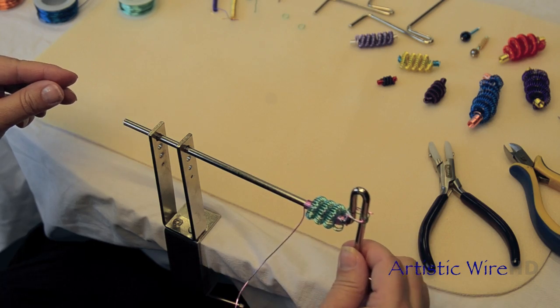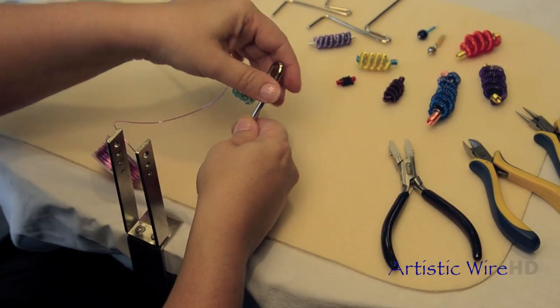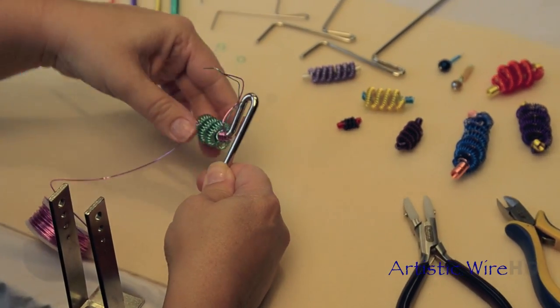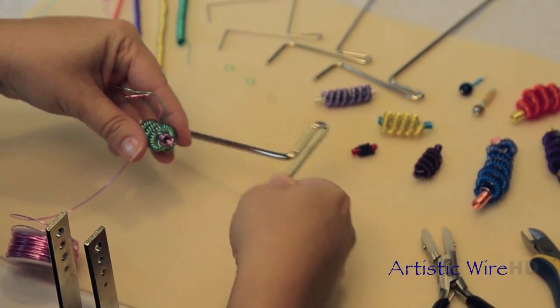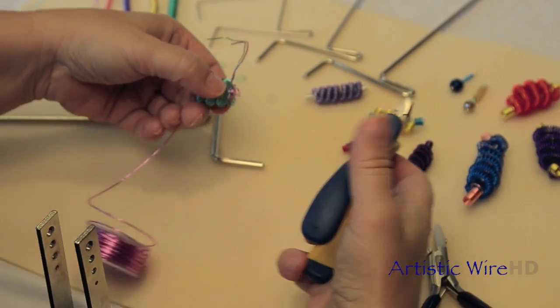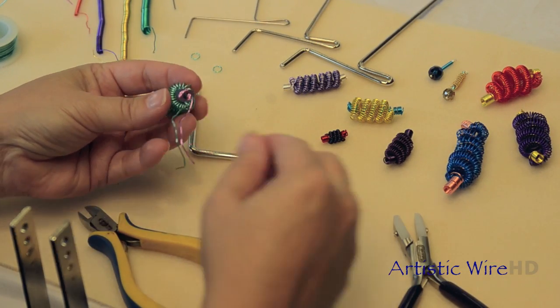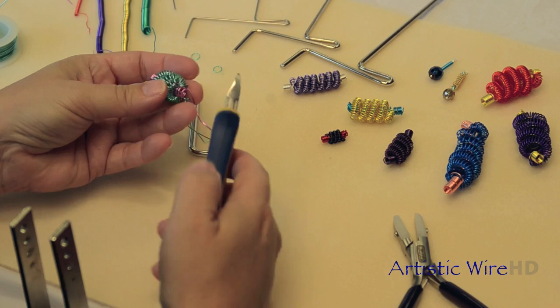Then what I'm going to do is remove that. And then I'm going to unwrap those pieces. Slide it off the rod. Bring in my wire cutters. Knip that at the bottom. And then I need to clean up these little tails.